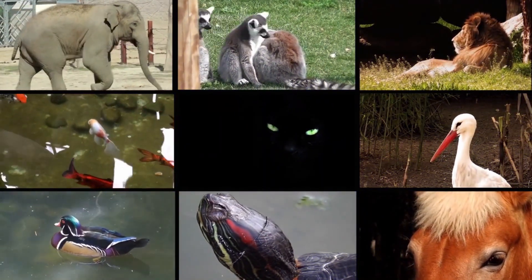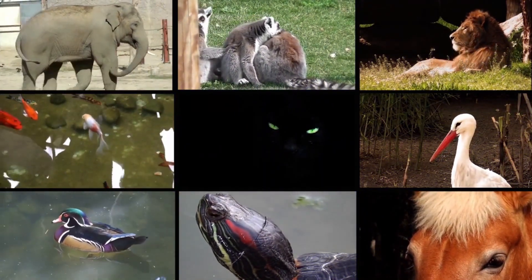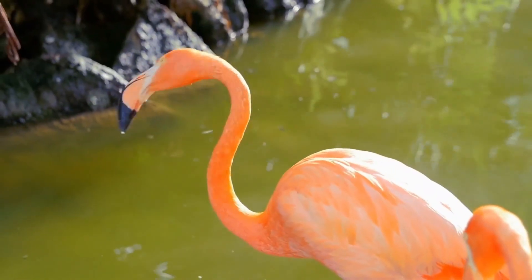For instance, given two examples of animal pictures in a text identifying their name and a comment about where they can be found, Flamingo can mimic this style given a new image to output a relevant description. For instance, this is a flamingo. They are found in the Caribbean.